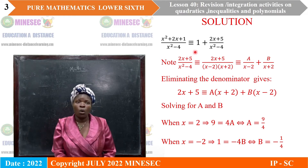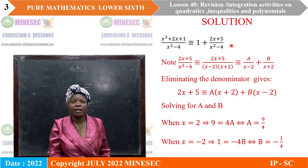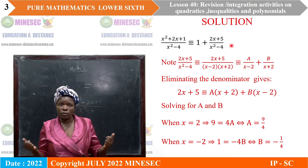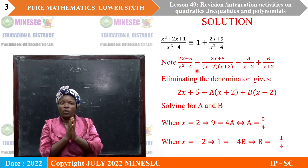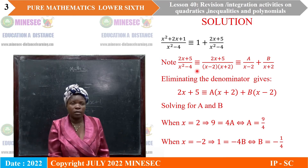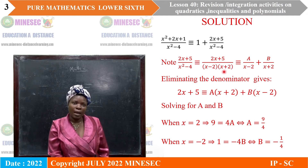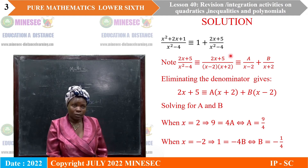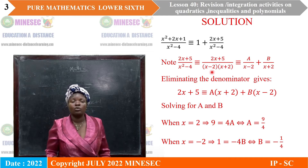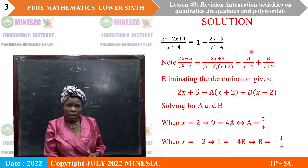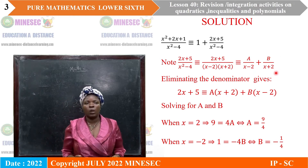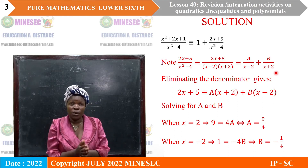Dividing to have it in canonical form, this will be equal to 1 plus 2x plus 5 divided by x squared minus 4. Note that the denominator x squared minus 4 is the difference of two squares, so it is the same as x minus 2 times x plus 2. So 2x plus 5 divided by x minus 2 times x plus 2 is identically equal to a over x minus 2 plus b over x plus 2. At this level, we eliminate the denominator — that is, we eliminate the fractions.